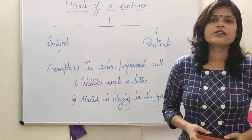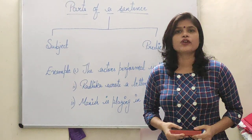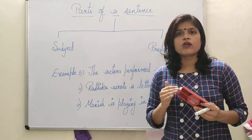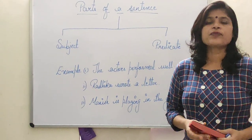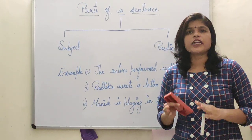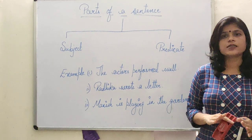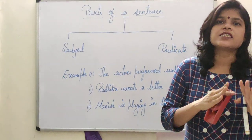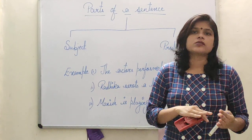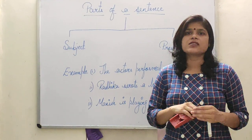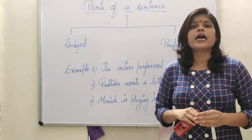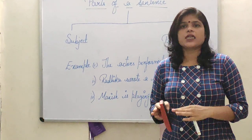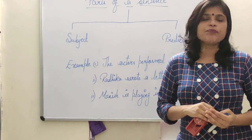Good morning students. Today we are going to start parts of a sentence. A sentence can be divided into two parts: subject and predicate. The part of a sentence which tells about whom the sentence is about is called a subject, and the part which tells about the subject is called a predicate.